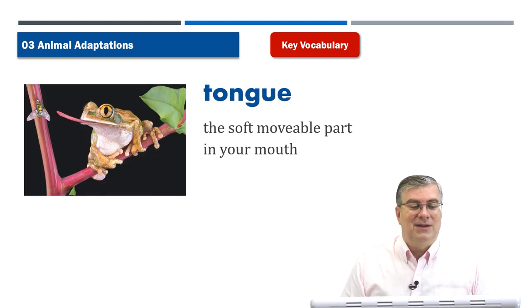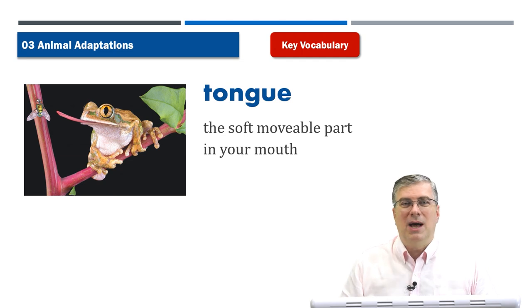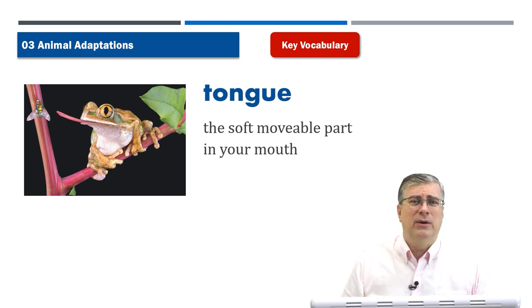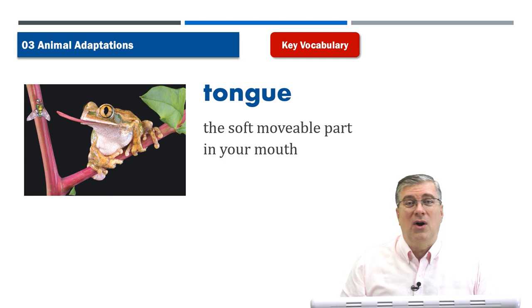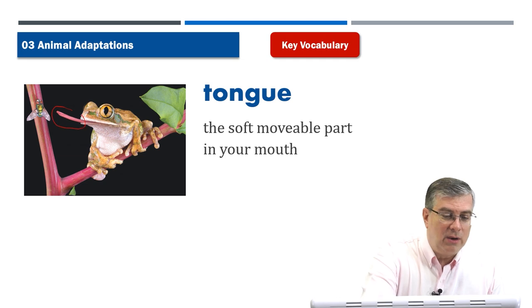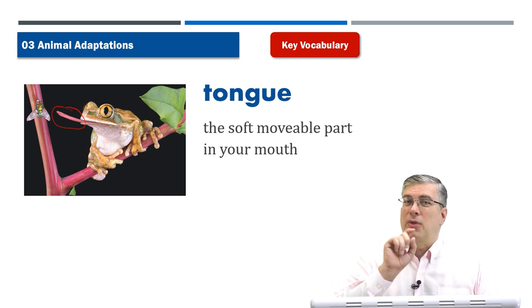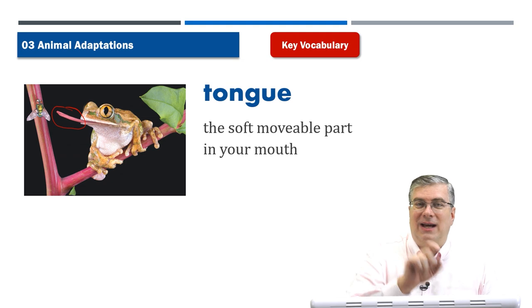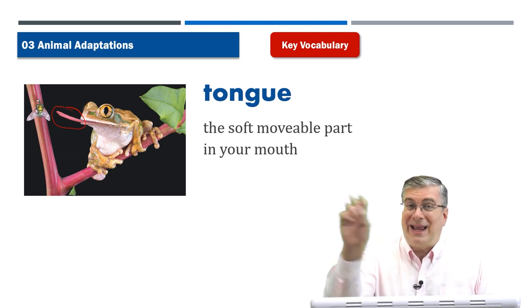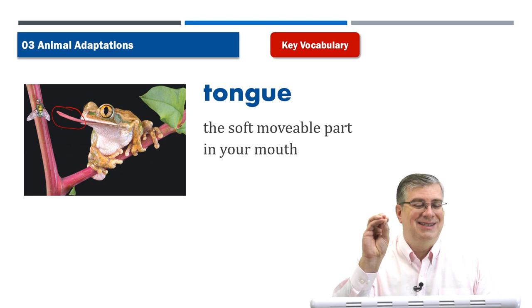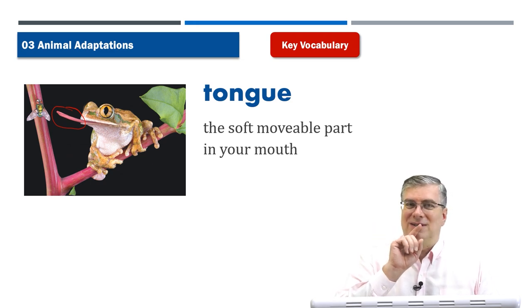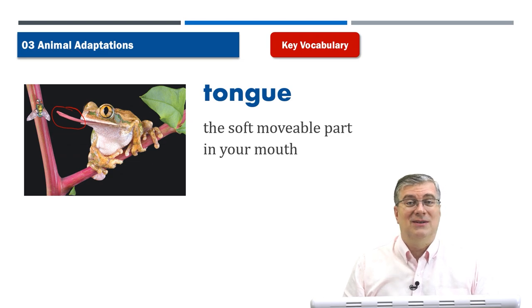Tongue is the soft movable part in your mouth. We can see a picture of a frog — a frog has a very famous and interesting tongue. Look at how long that is. The frog can flick its tongue out at an insect far away and catch it because the tongue is sticky. So the frog uses its tongue to catch its food — insects.